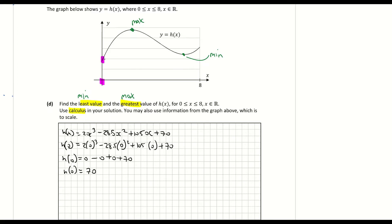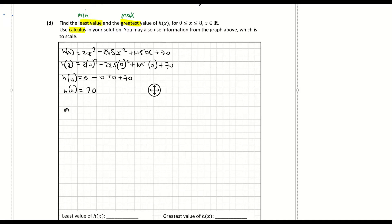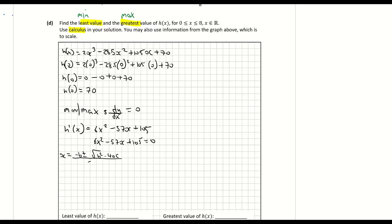Now I'll find the maximum value using calculus — specifically finding the max and min turning points by setting the first derivative equal to zero. Differentiating h of x gives 6x squared minus 57x plus 105, and I let that equal to zero. I'll use the quadratic formula: x equals minus b plus or minus the square root of b squared minus 4ac, all over 2a.